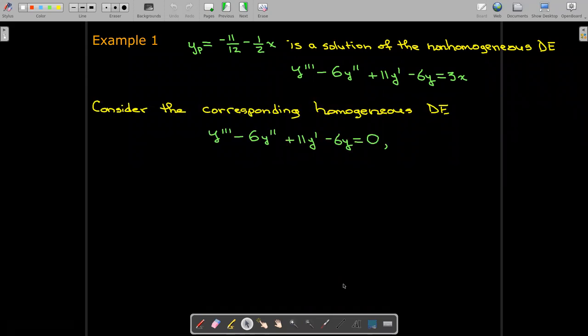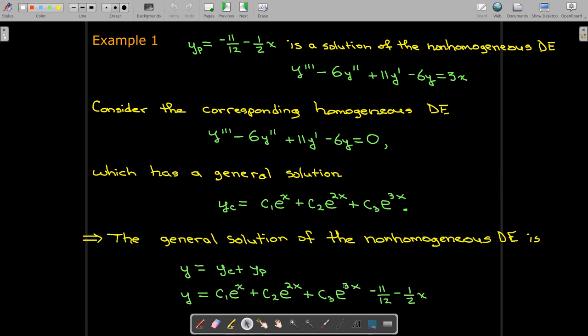So we look at the corresponding homogeneous differential equation. It has a general solution with three terms, and we're calling that our complementary solution. So the general solution to the non-homogeneous differential equation would be the sum of our complementary solution and our particular solution.